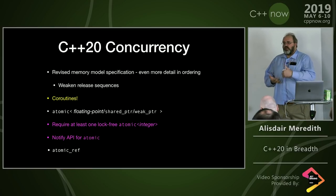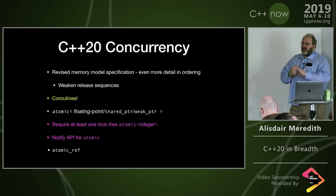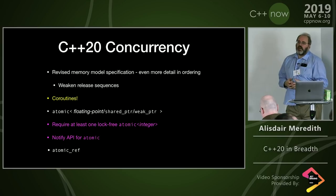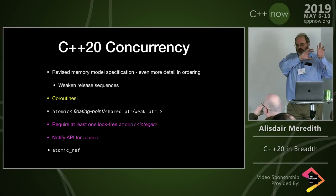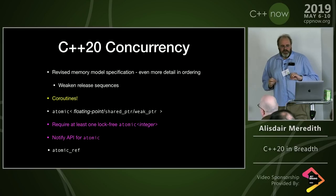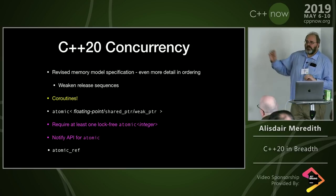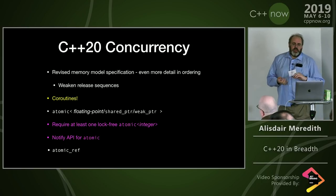For those who do work at the metal, we're getting down to fine details — making the memory model more robust and explicit, including something on weakening release sequences. Coroutines are noted here as a pillar for concurrency as well. We're upgrading standard atomic: C++20 will have support for atomic floating-point types, atomic shared_ptr, and atomic weak_ptr.